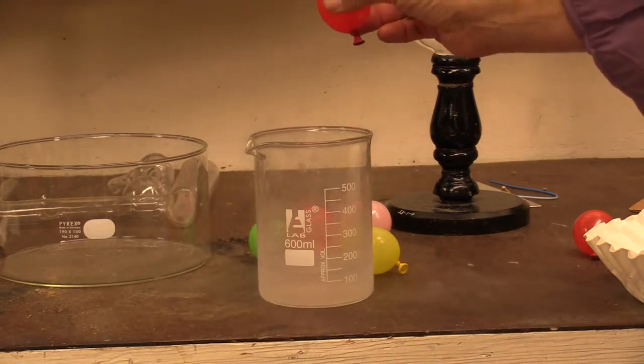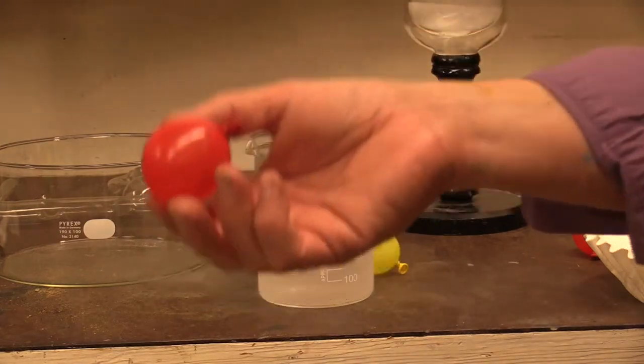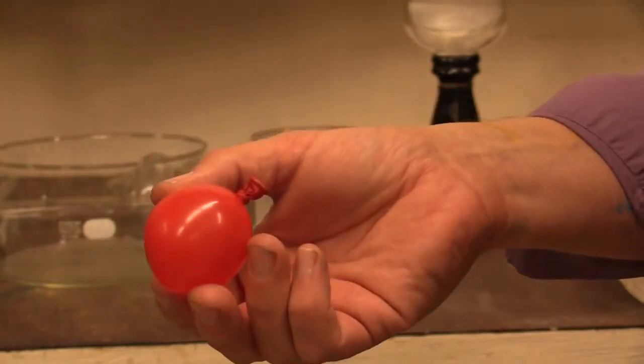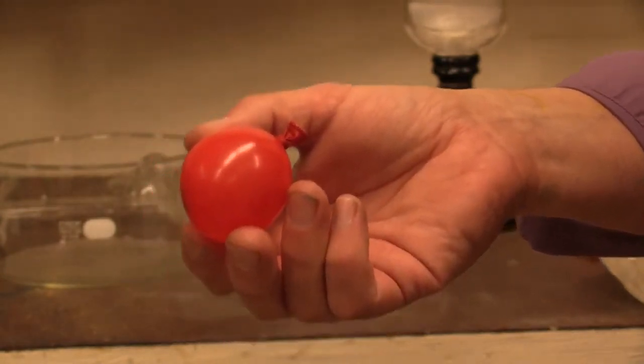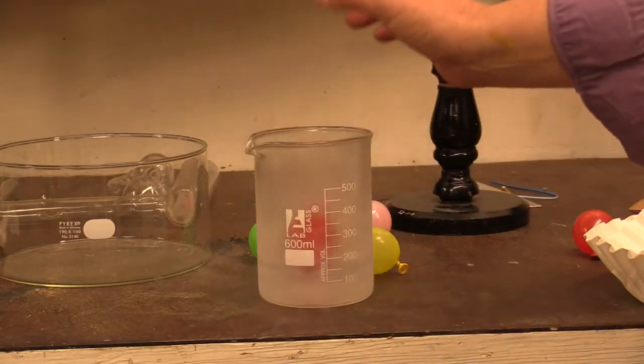Now it's mostly done boiling. It's made the glass very cold. So when you cool a gas, you decrease the pressure. This balloon is a certain size because of the pressure inside of it.